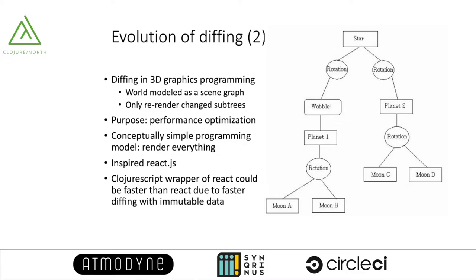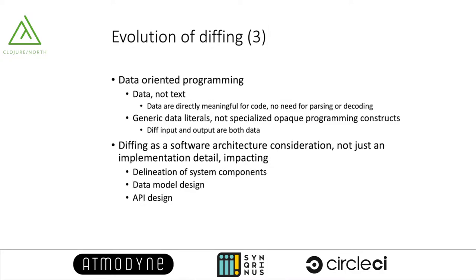This conceptual simplicity inspired the popular React web rendering framework, where a ClojureScript wrapper of React could actually be faster than React itself sometimes, due to ClojureScript's immutable data structures enabling faster rendering by producing faster diffing. In Clojure, we would like to work with data — so it's not going to be diffing text, instead it will be diffing data on generic data structures, not specialized programming constructs wrapped in classes. By taking advantage of generic immutable data structures, we could elevate the data diffing approach to the level of software architecture consideration.